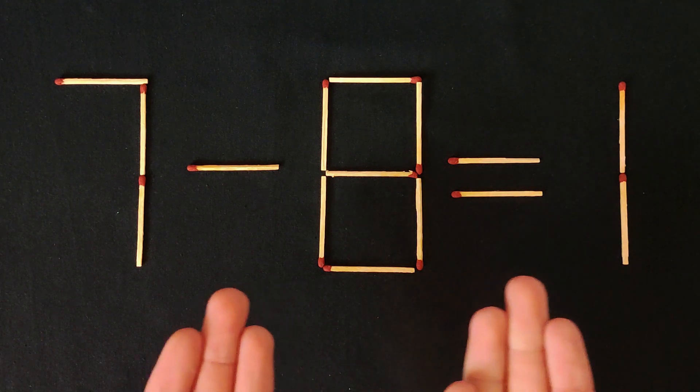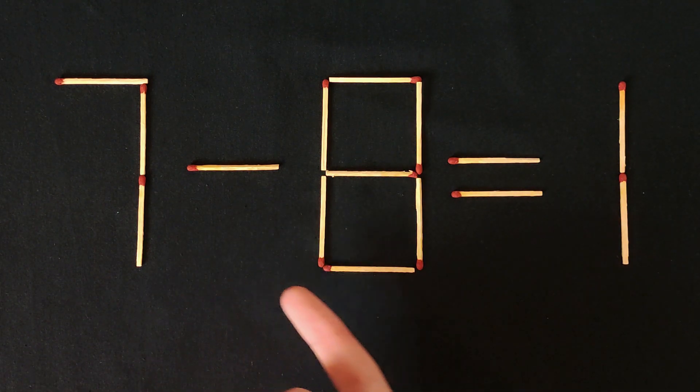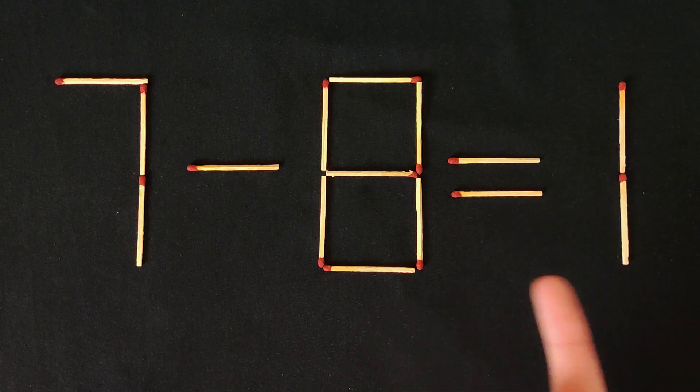Hi guys, today we have a puzzle like this. 7 minus 8 equals 1, that's a wrong equation.